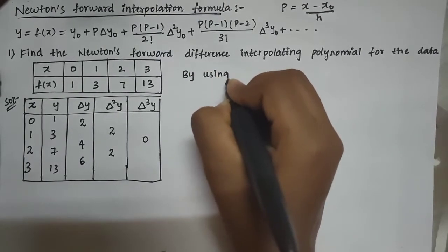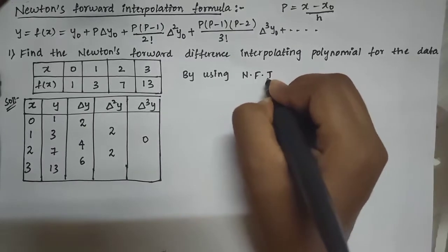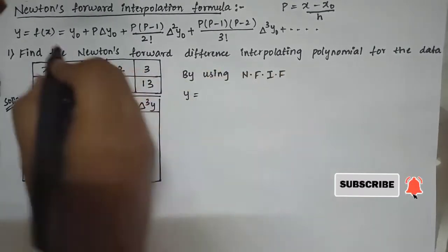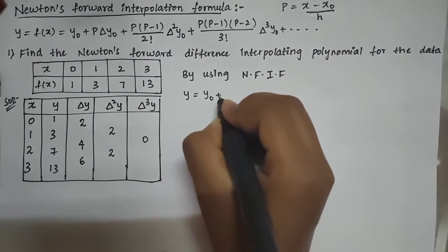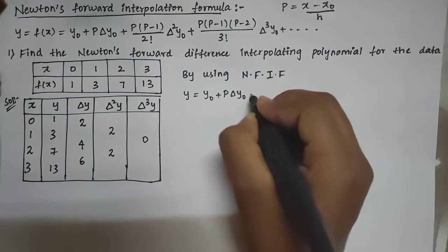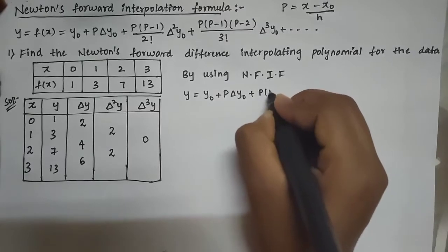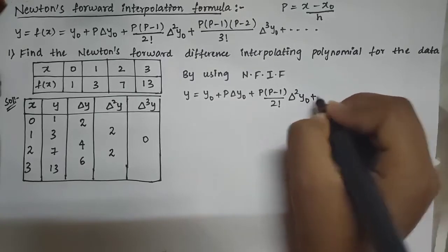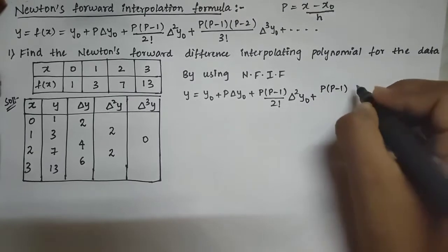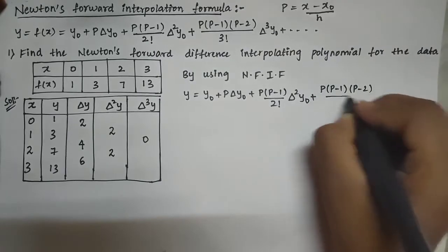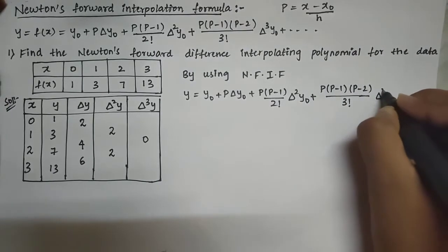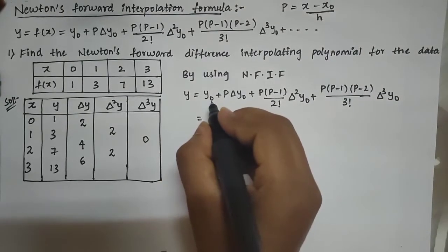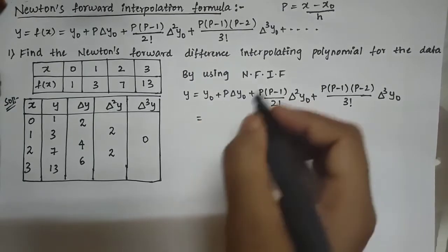By using Newton's forward interpolating formula: y = y₀ + p·Δy₀ + p(p−1)/2! · Δ²y₀ + p(p−1)(p−2)/3! · Δ³y₀. Now let us substitute the values. To find p, we use p = (x − x₀)/h.